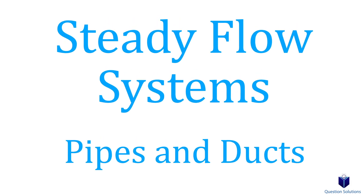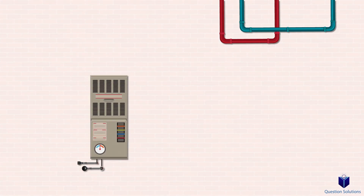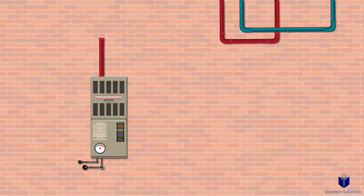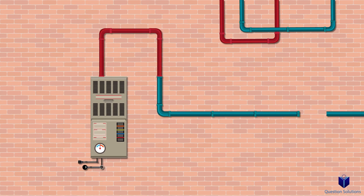Let's take a look at pipes and ducts, another steady flow device we are all very familiar with. They carry the water we use to drink and shower, the refrigerant in our air conditioners and fridges, and the hot air during the winter months from our furnaces, just to name a few.